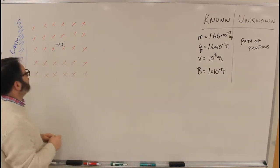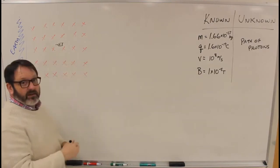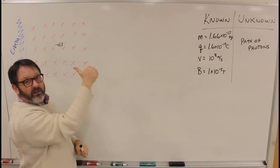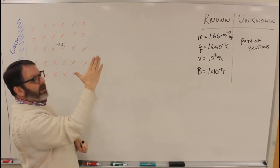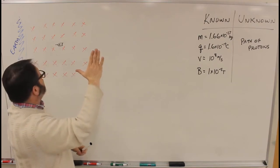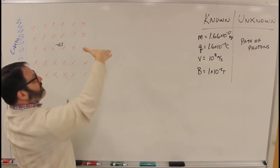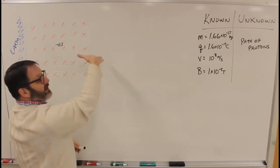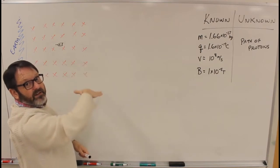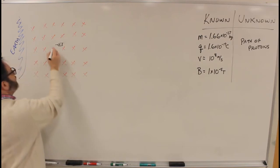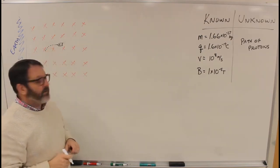What's going to happen is the protons come out. They've got a velocity in that direction. I'm going to use my thumb, so the thumb's in the direction of the velocity. I've got a magnetic field, so my fingers are going to point in the direction of the field, which is in. You can see that if I put my thumb in the direction of V, my fingers in the direction of B, my palm is now pointing down. So when the protons come out, they're going to be pushed downward. Actually, as they come out, they're going to curve downward.